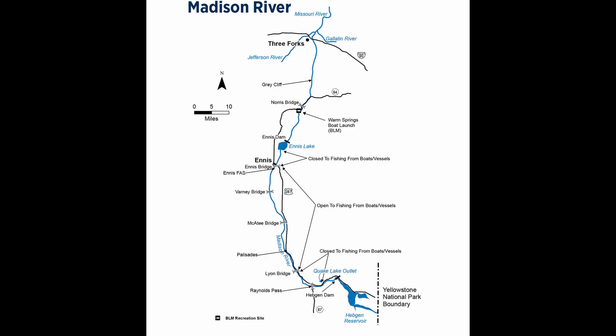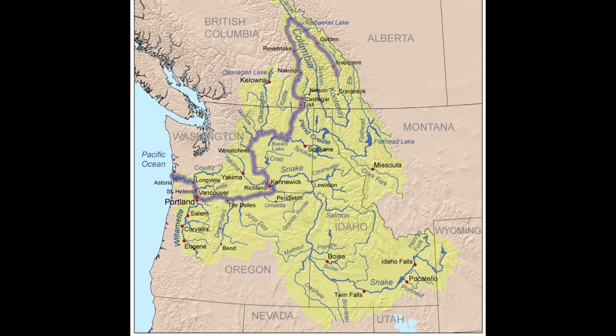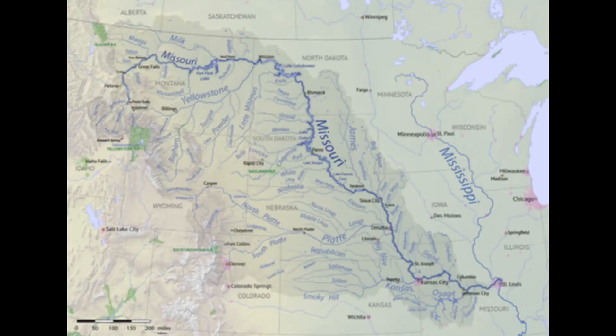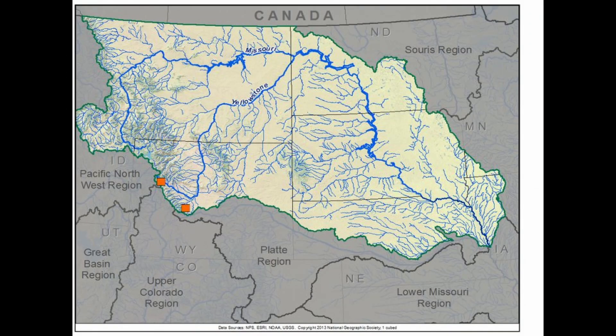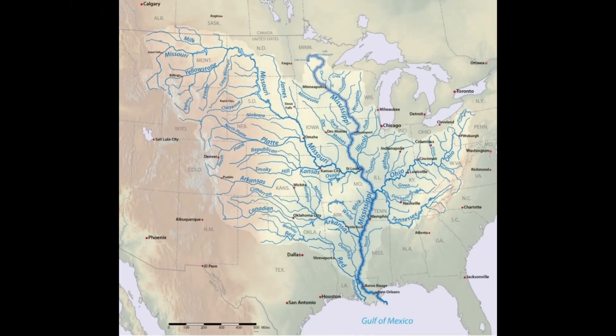Consequently, Montana rivers flowing west off the divide flow by way of the Columbia River system, delivering their water to the Pacific Ocean. Rivers flowing east off the divide flow via the Missouri River system, moving toward the Atlantic, specifically the Gulf of Mexico.